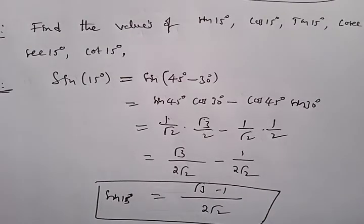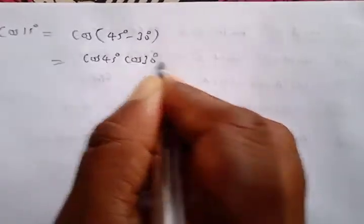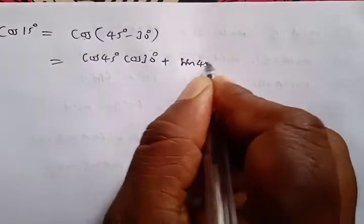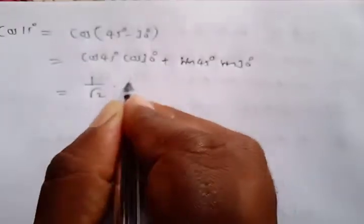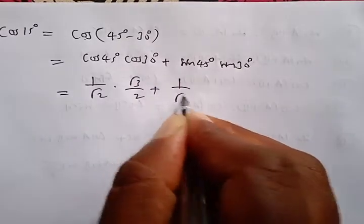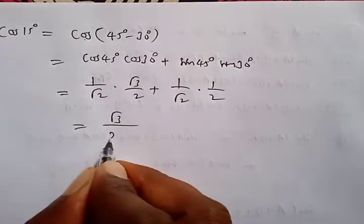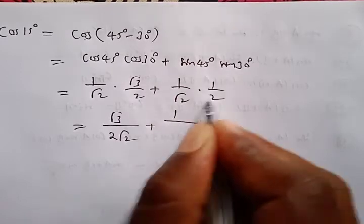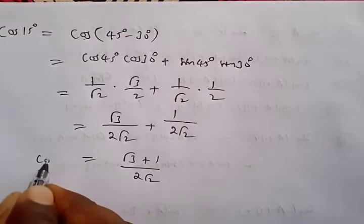For cos 15°, write 15° = 45° - 30°. Using cos(A-B) = cosA·cosB + sinA·sinB: cos 15° = cos45°·cos30° + sin45°·sin30° = (1/√2)·(√3/2) + (1/√2)·(1/2) = √3/(2√2) + 1/(2√2) = (√3 + 1)/(2√2). So cos 15° = (√3 + 1)/(2√2).